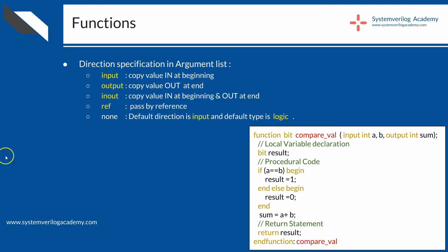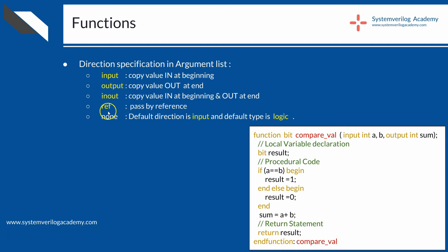If the direction is output, its value will be copied at the end of function execution from the function to the function calling place. If it is inout, both of these operations will be performed. If you specify the direction as ref, an entirely different operation will be done, which you will see in the next slide. The default direction type is input, so if you don't specify any direction, the arguments will be of type input, and the function will look similar to functions in C or C++.